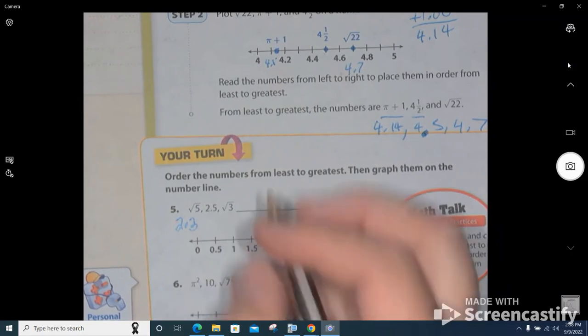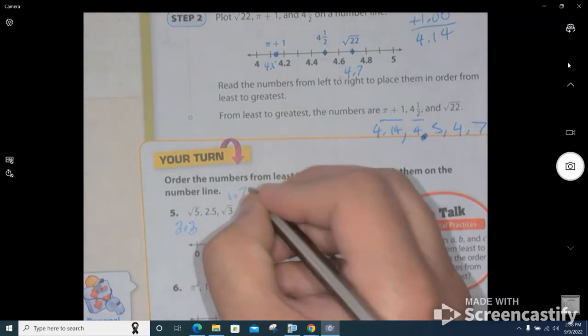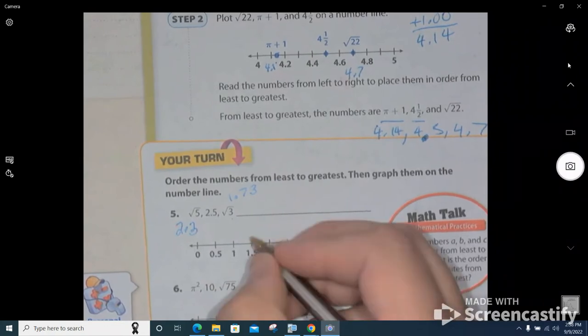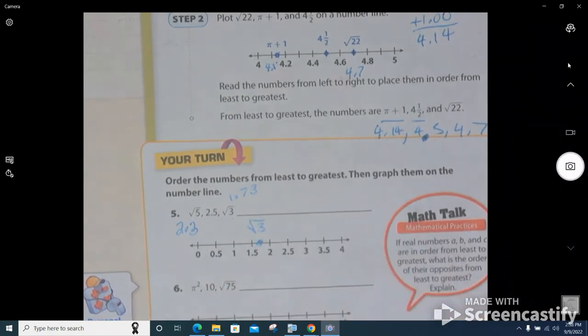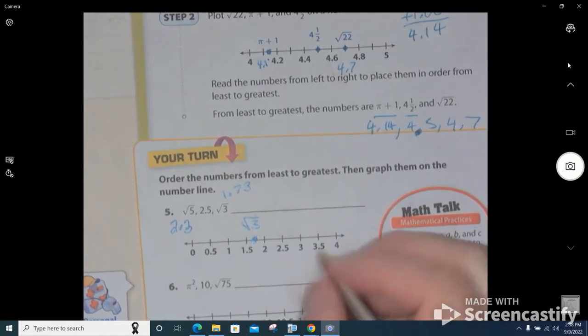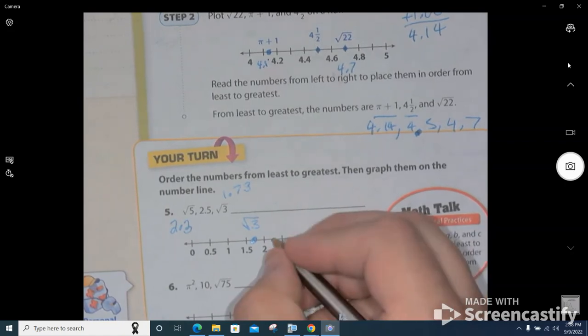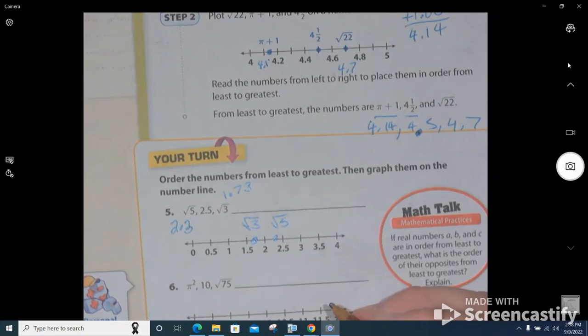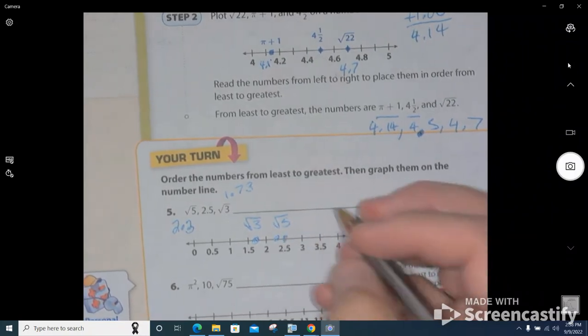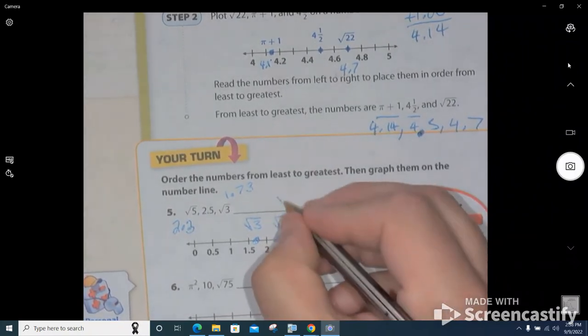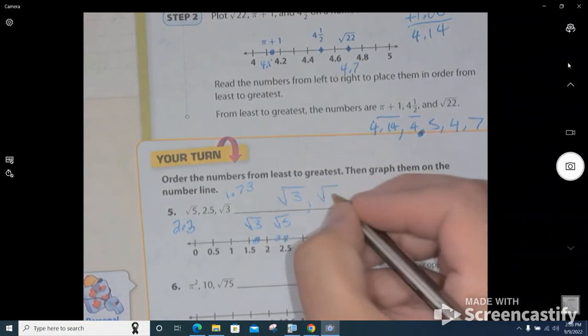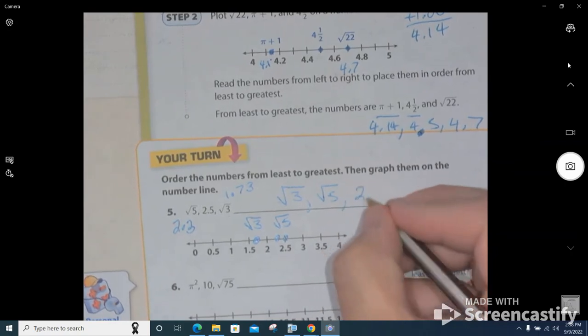And then what did we say the square root of 3 was? Did you guys memorize that yet? Yeah, it's 1.73, right? So the square root of 3 is about right here, isn't it? That's the square root of 3, because it's about 1.73. The square root of 5 is about 2.3, so that's somewhere here. And then 2.5 is actually right here. So then if I were to write these from least to greatest, I would say square root of 3, square root of 5, and 2.5.